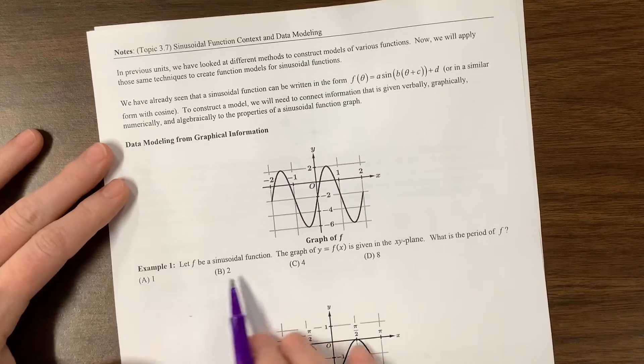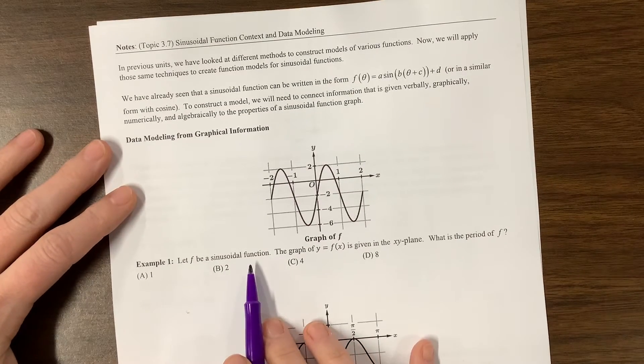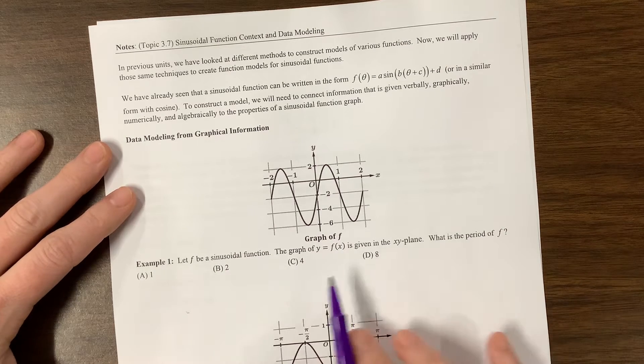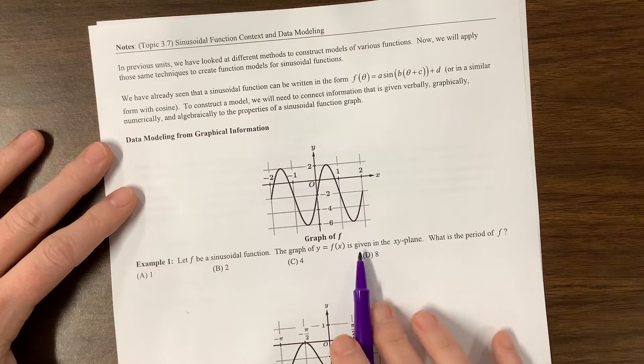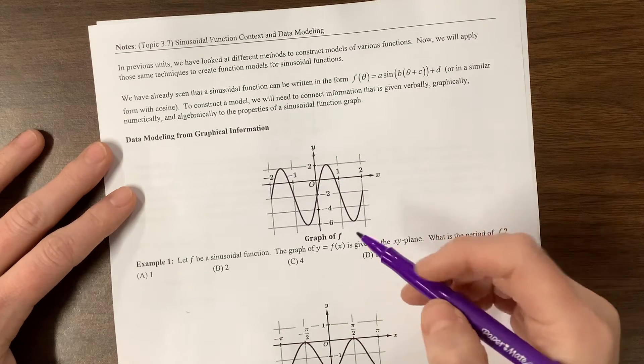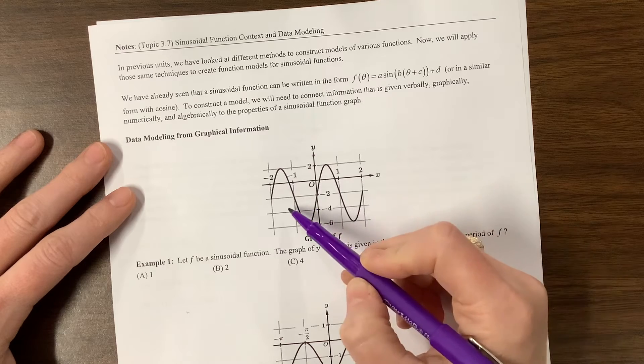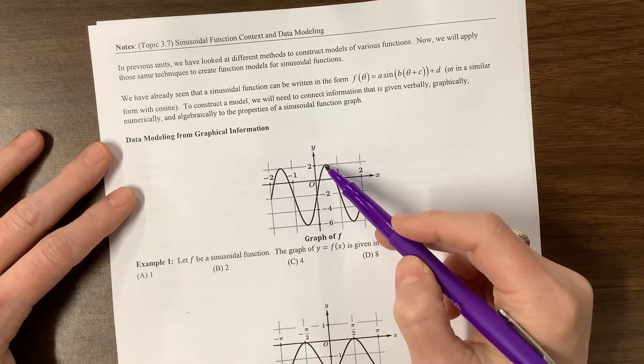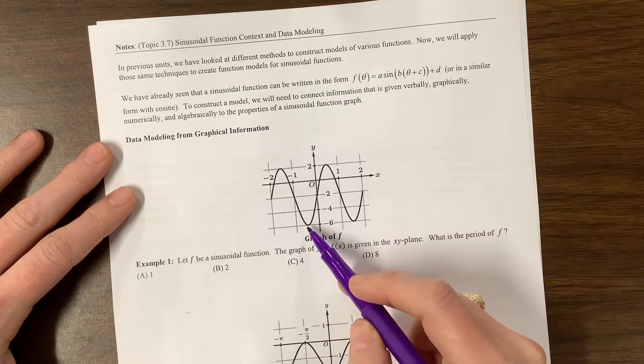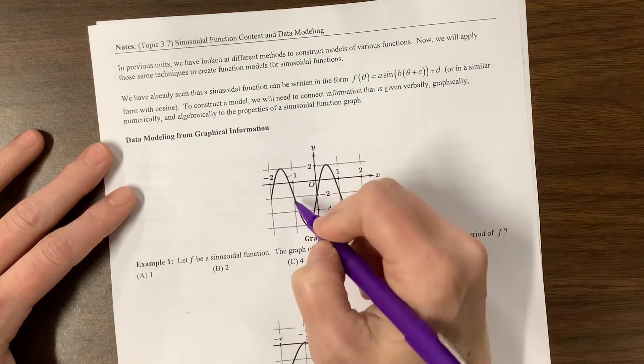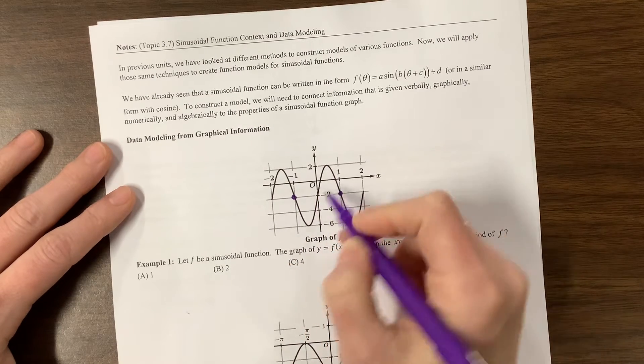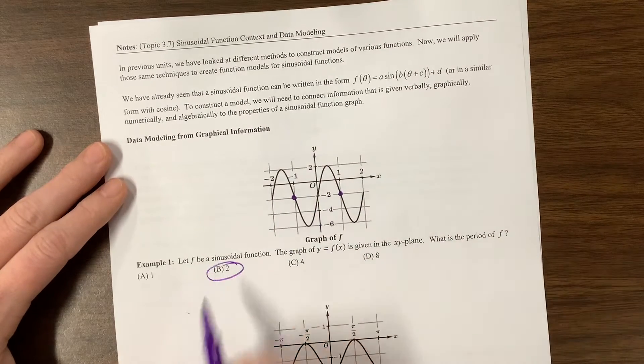Example one, let F be a sinusoidal function. The graph of Y equals F of X is given in the XY plane. What is the period? So what I'm going to do is I'm going to look to see how long does it take to do everything it's going to do. I'm assuming that if we start here, we're going down and we end here. So, it has a period of 2.